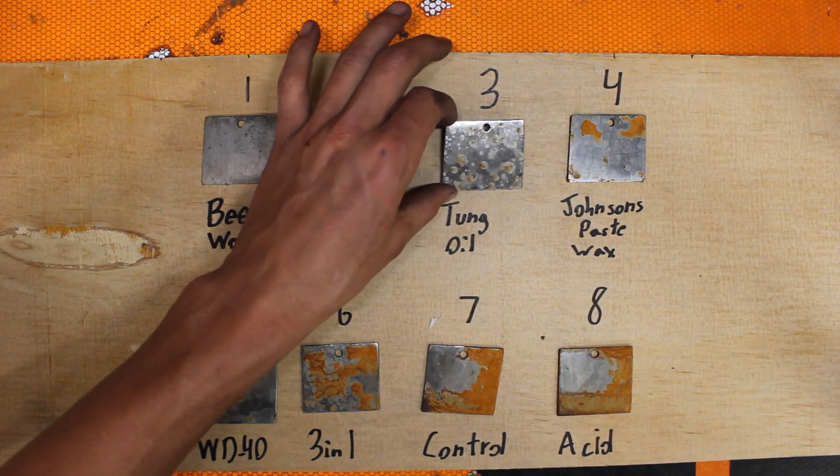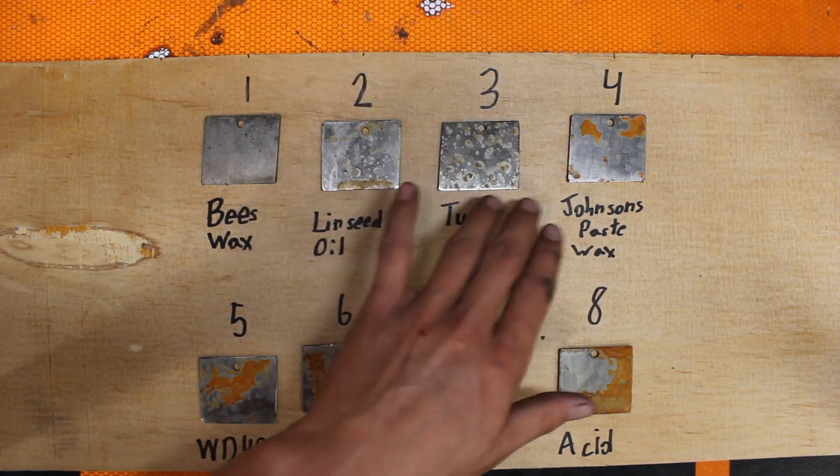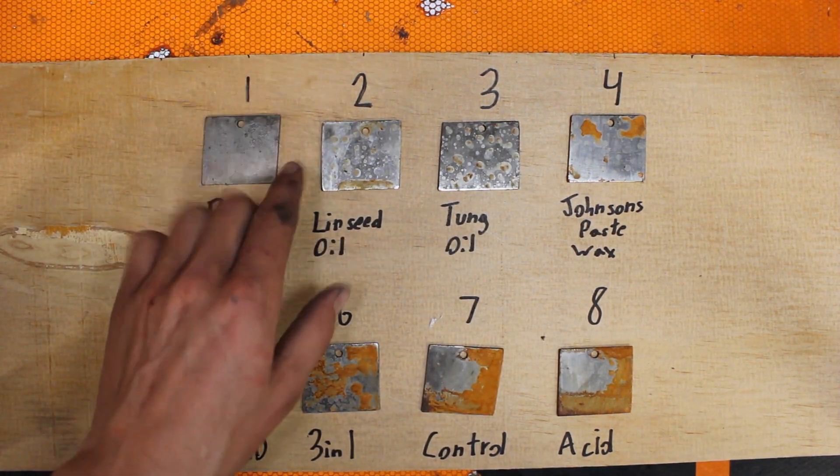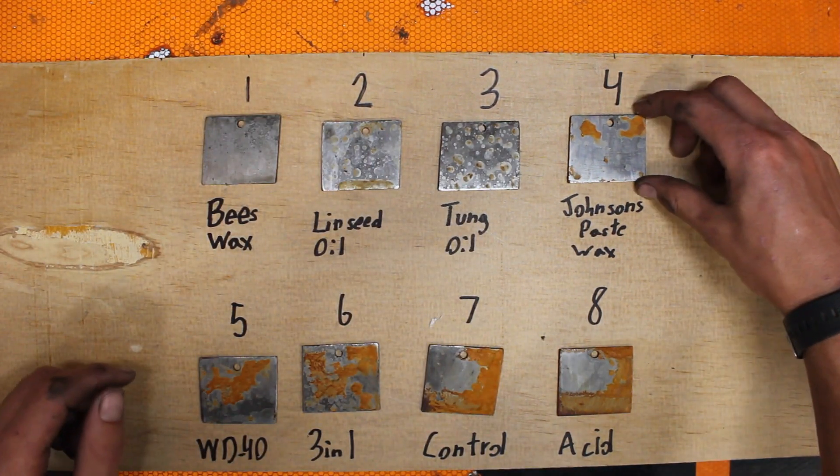Tung oil is almost perfect for the most parts but you get these kind of drops that got more rusted and I think the linseed oil did so I put it in third place. Johnson's paste wax, you can see I just have these bad spots here but most of it is really good, it's really good stuff.